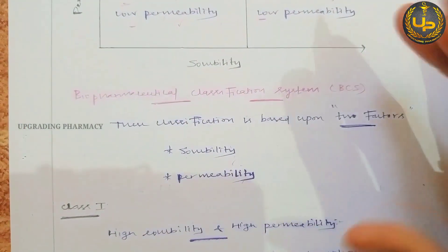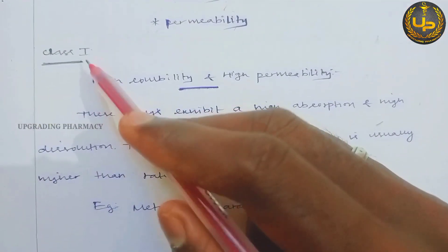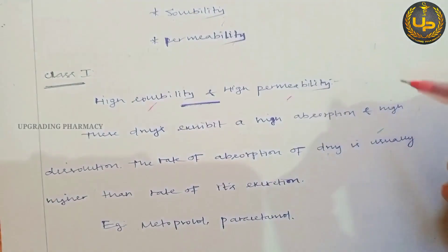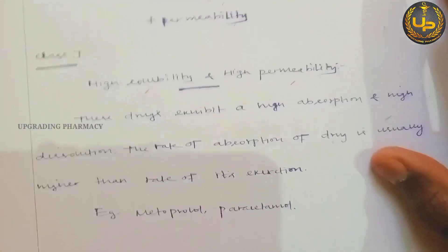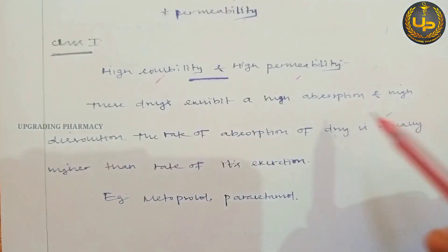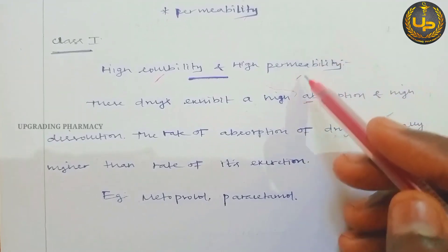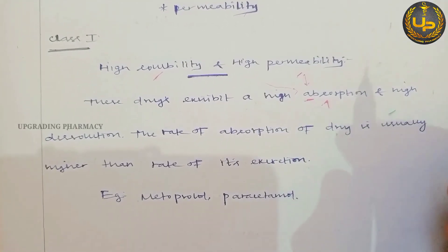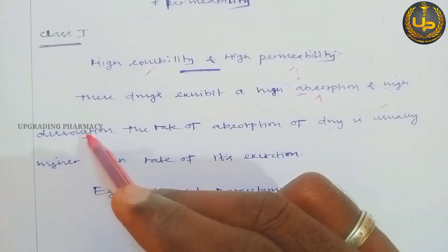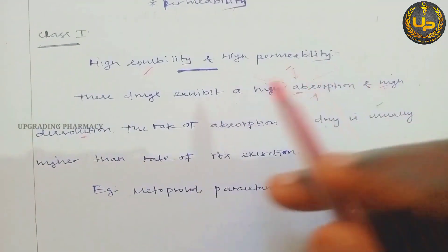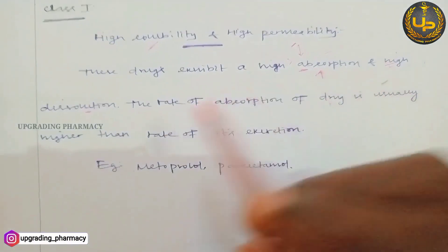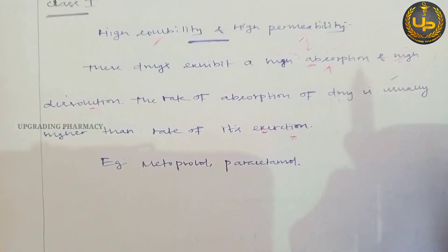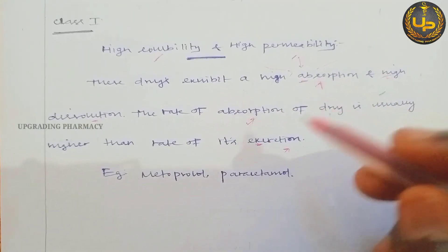Looking at Class 1 in more detail: high solubility and high permeability means these drugs exhibit higher absorption. Due to higher solubility and permeability, the drug is easily absorbed from the stomach and reaches blood circulation. It has high dissolution, which is prior to absorption. The rate of absorption is higher than the rate of excretion.